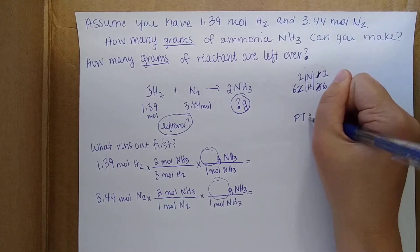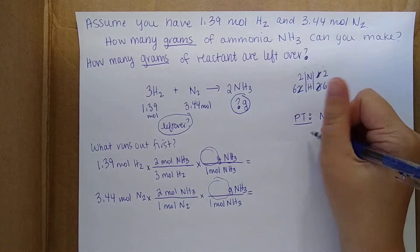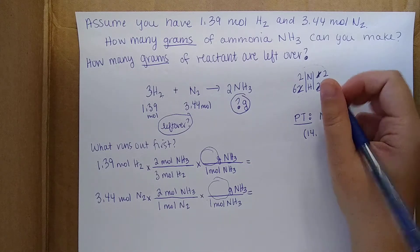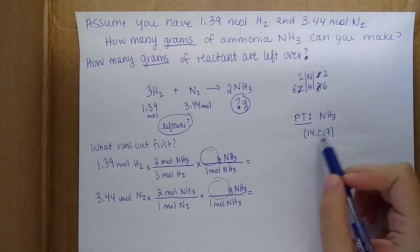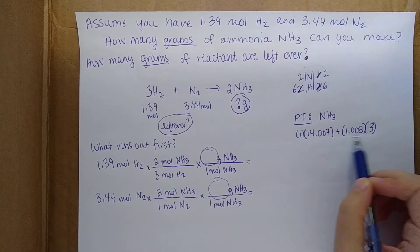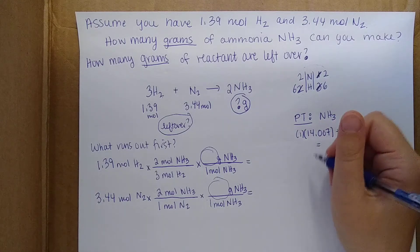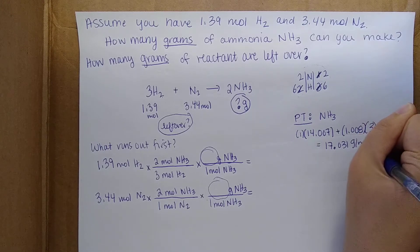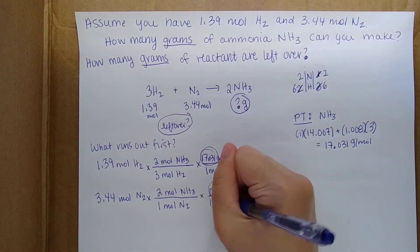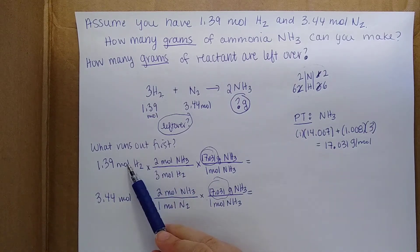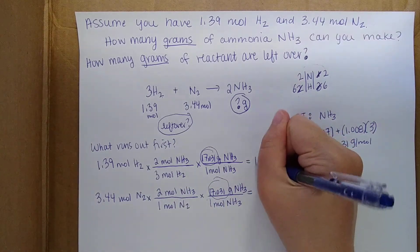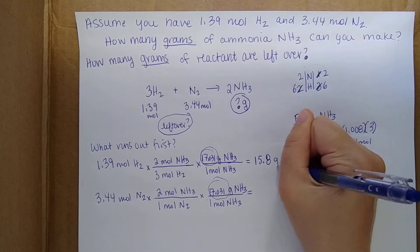Let's go to the periodic table to figure out the molar mass of ammonia. Nitrogen is 14.007 grams per mole — that's an implied 1 nitrogen — and there are 3 hydrogens. Working that out, the molar mass of NH3 is 17.031 grams per mole. Plugging 17.031 into both calculations: the first one — starting from H2 — comes out to 15.8 grams of NH3, and the second one — starting from N2 — comes out to 117 grams of NH3.